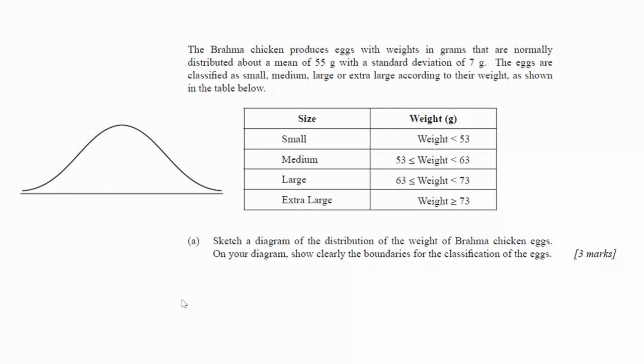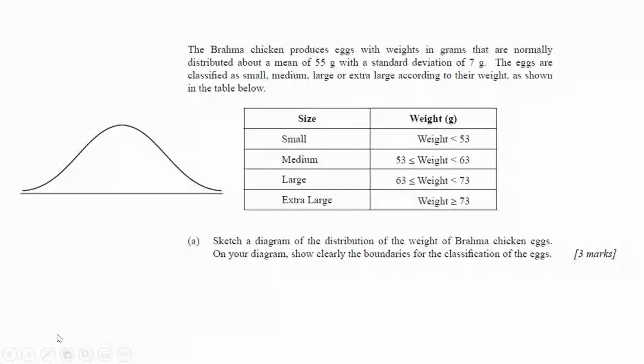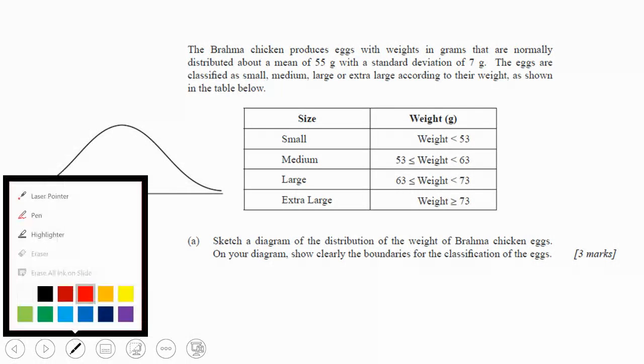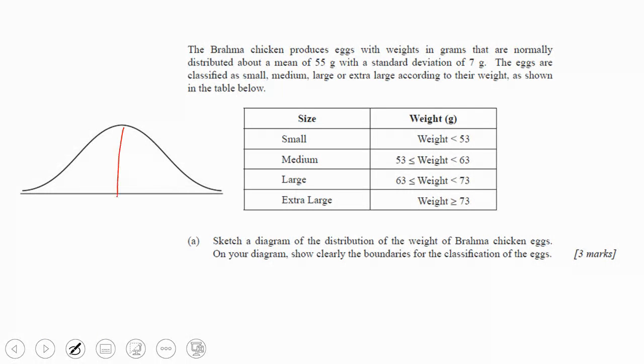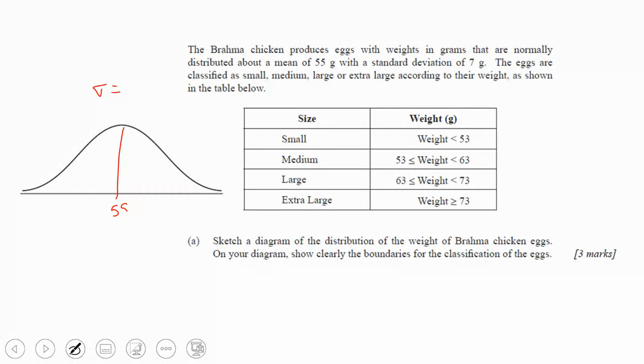So starting out, you read this and do just like you would with any other question. You want to make a drawing and put the mean on there. So the mean is 55, standard deviation is 7, so you know what you're going to put in your calculator.